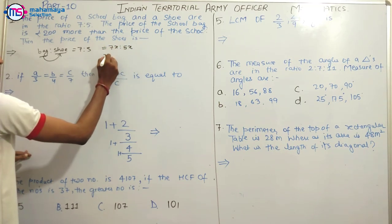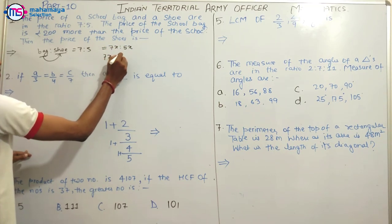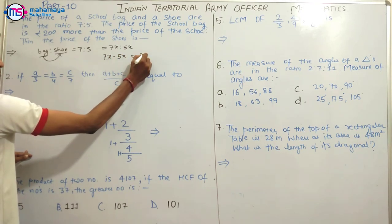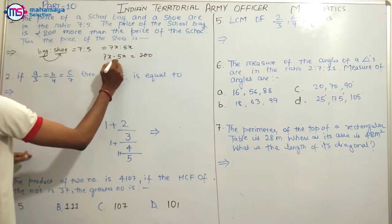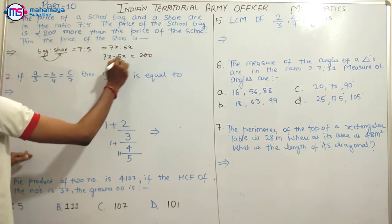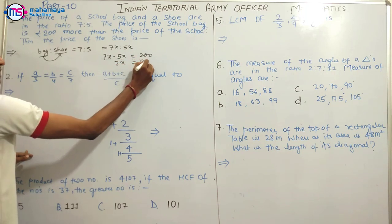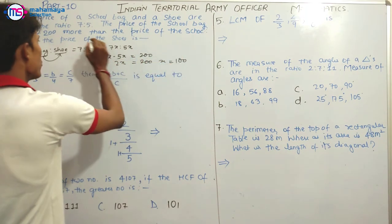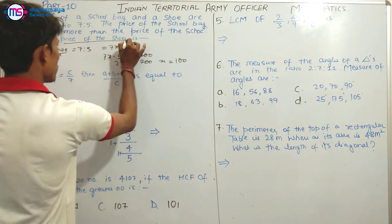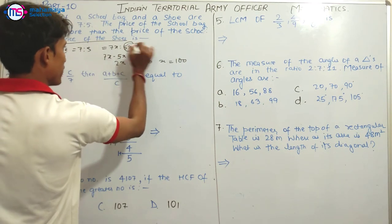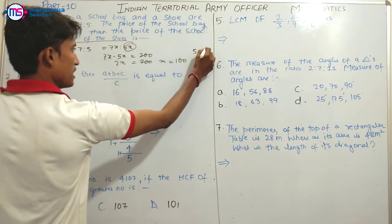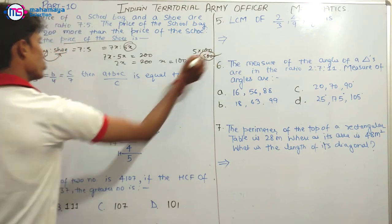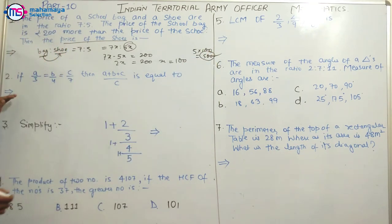The price of the bag is at least 200 more than the shoe. So 7x minus 5x, which means 2x is at least 200, then x is at least 100. The price of the shoe is 5x, so it is at least 500. That is the price of the shoe bag.